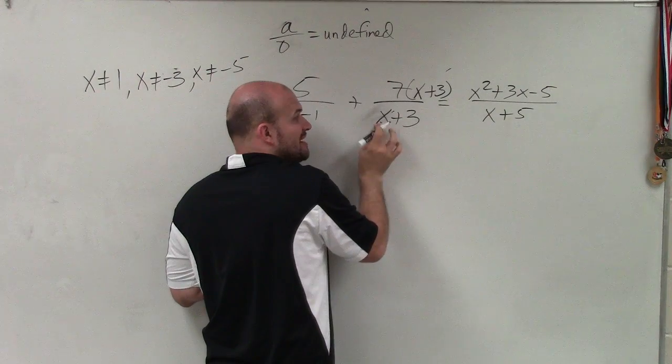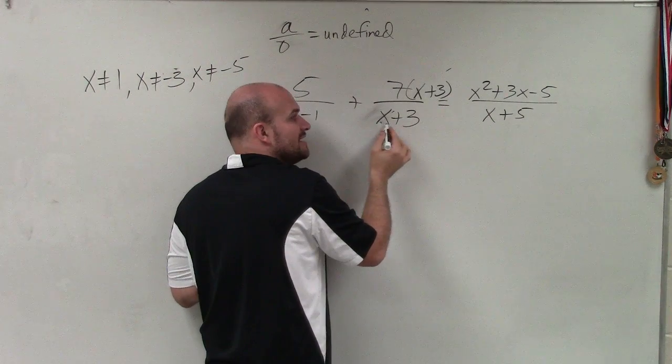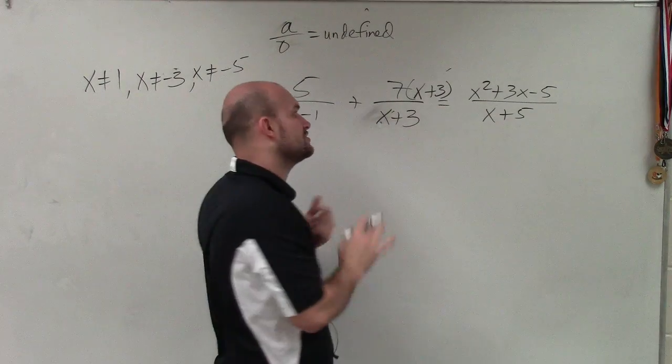Therefore, even though it's still a restriction, my value x can still not equal negative 3. However, it's going to produce a hole, not actually an asymptote.